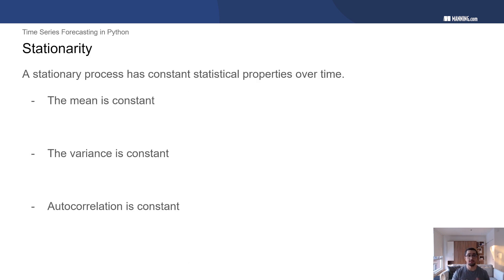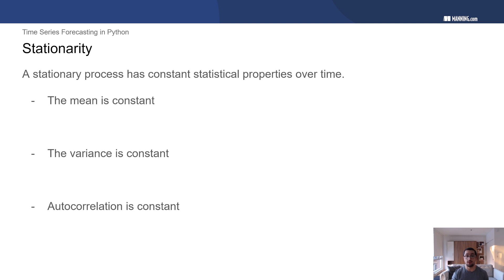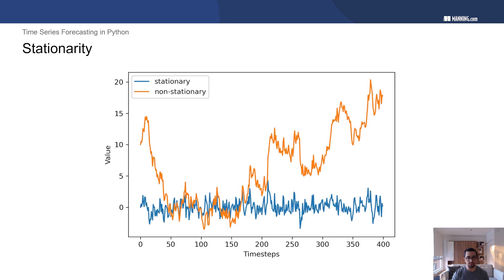First, stationarity: a stationary process is defined as having constant statistical properties over time. Therefore, the mean, the variance, and the autocorrelation are constant — they do not depend on time. Here in orange, we have an example of a non-stationary process, and in blue, we have an example of a stationary process.